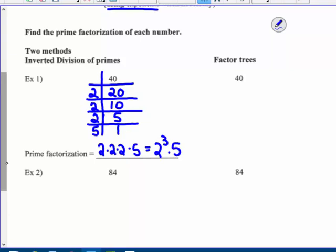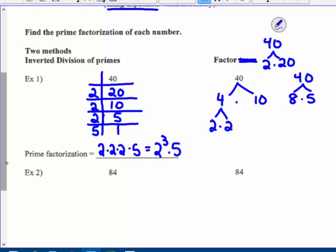The other way, prime factorization, is to use this branch method. And I could start this as 4 times 10, or I could start it as 8 times 5, or I could start it as 2 times 20. It doesn't matter. I'm still going to get my branches down to all prime numbers, which is 2 to the third power times 5.